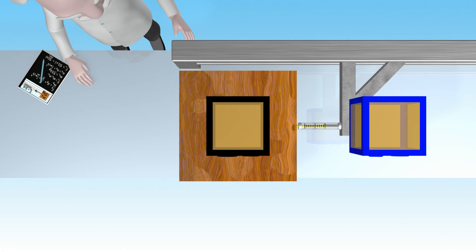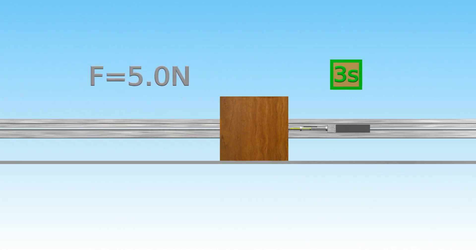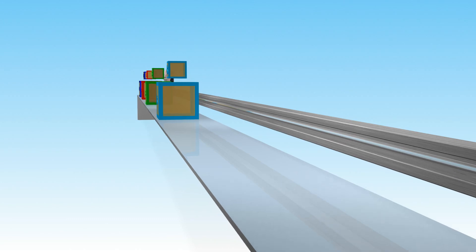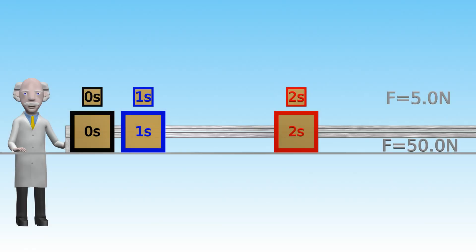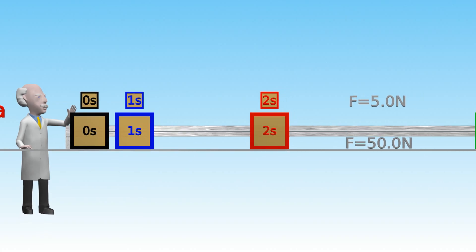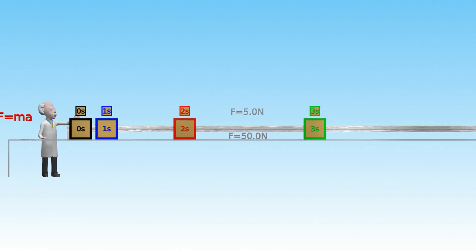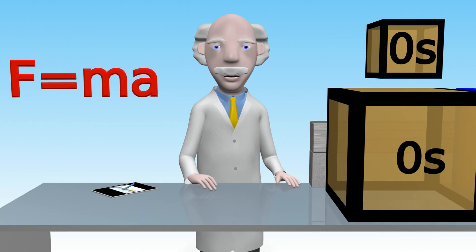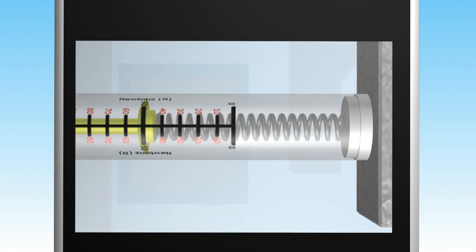Let's compare the positions of the snapshots for the large block with a force of 50 newtons applied and the small block with a force of 5 newtons applied. We can see that the distance between the snapshots at one second intervals are the same. This is because they are accelerating at the same rate, just as we predicted. Looking at the recording of the Newton balance during the test, we see that a force of 50 newtons was indeed applied to the 50 kilogram block.